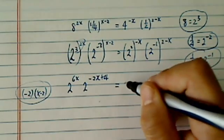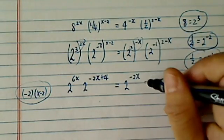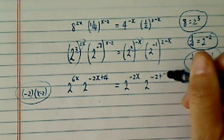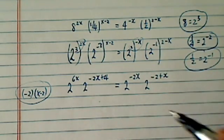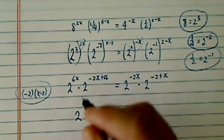This equals 2 to the minus 2x, and then 2 to the minus 2 plus x. I distribute the minus sign here. Now I'm going to use the property that if there's the same base, I'm going to add them.